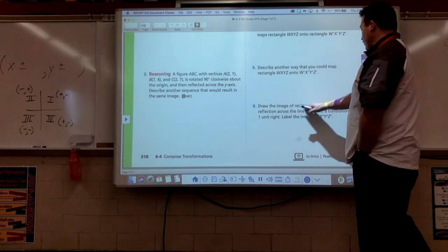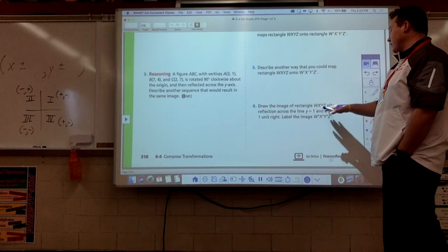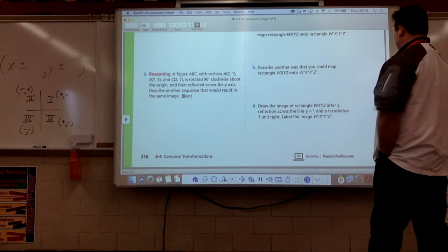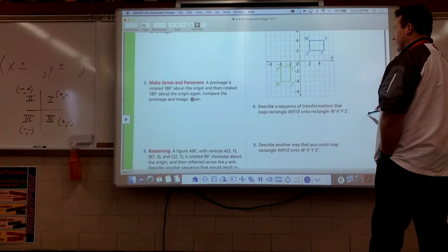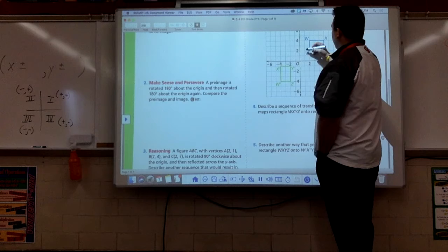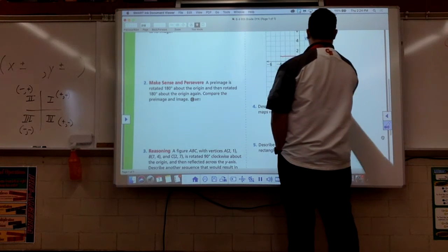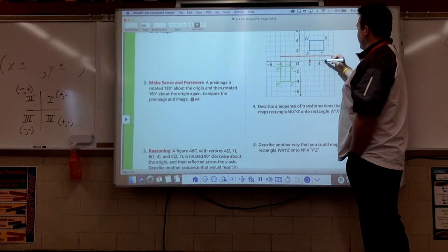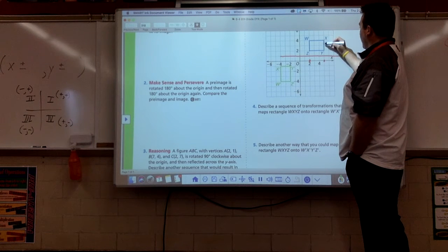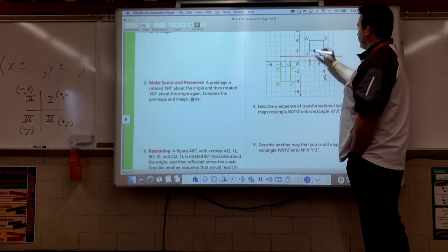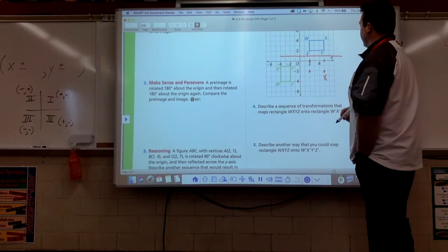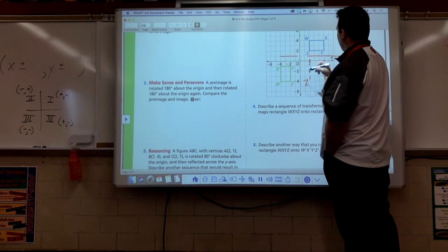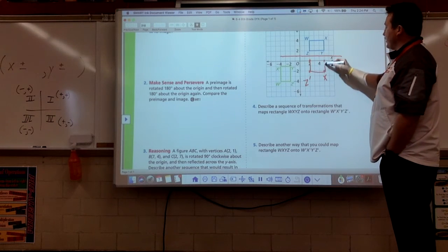And then we're going to do something fun here at the end. Draw the image of that rectangle after reflection across Y equals 1 and a translation of one unit right. Y equals 1, this line right here. So this means Z is going to be here. Oh, and then we're going to go one unit to the right. 1, 2, 3. 1, 2, 3. This is X. This is Z and W. Now we just got to translate it one unit to the right.